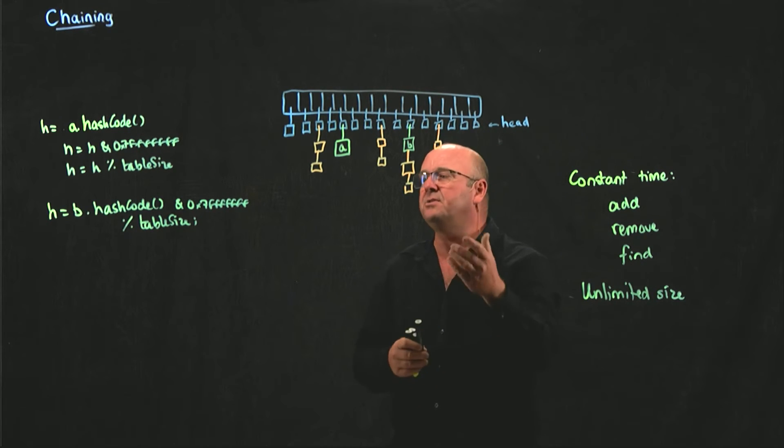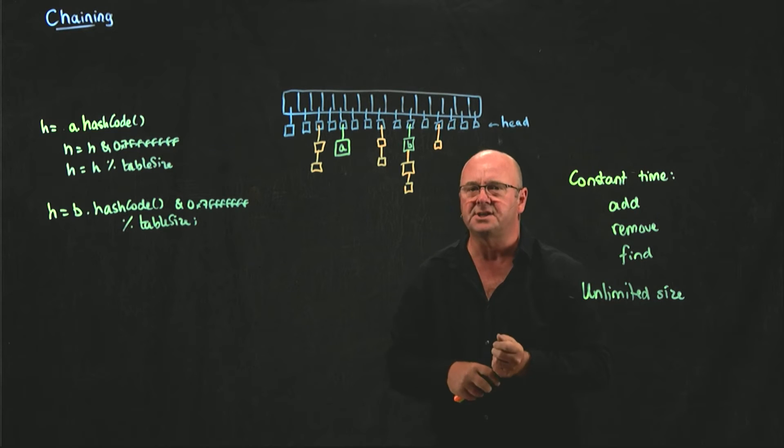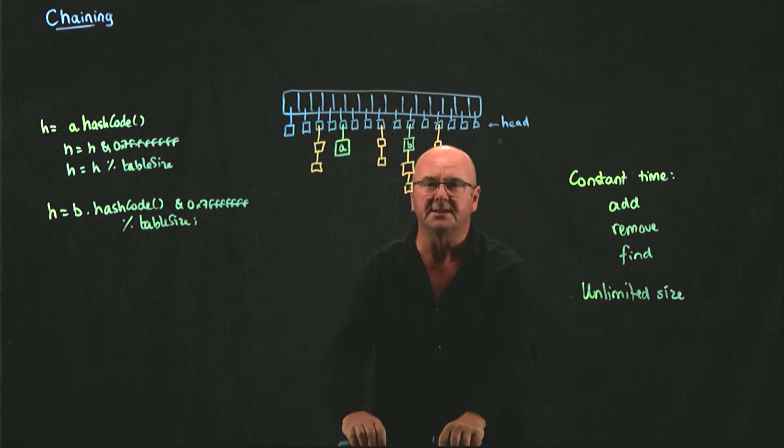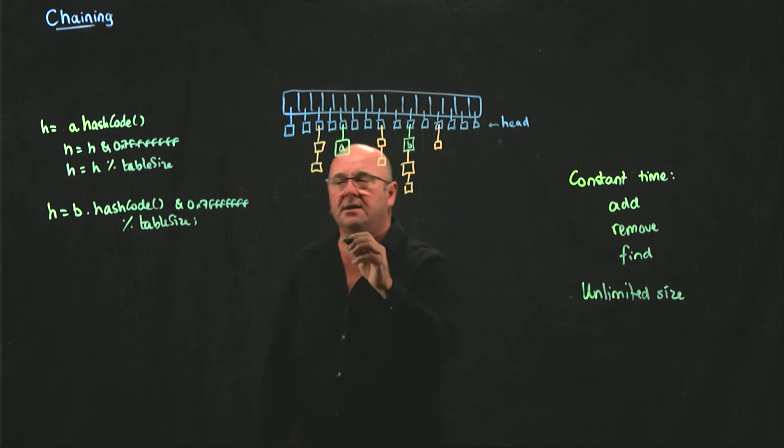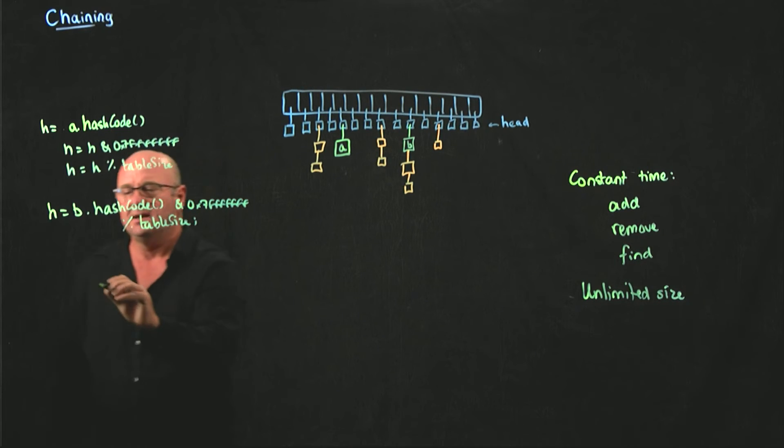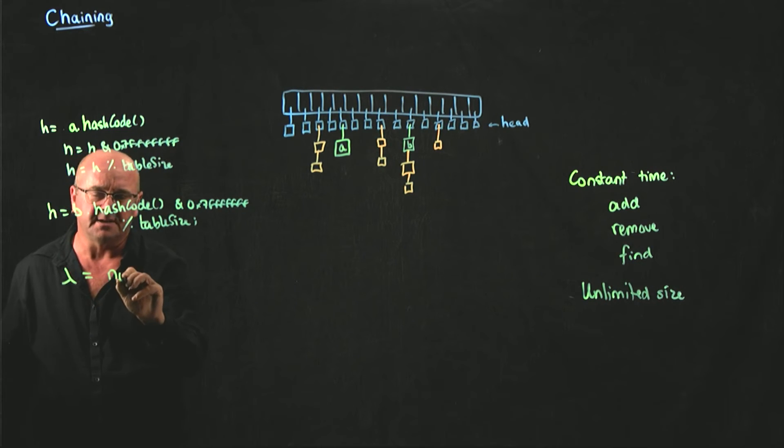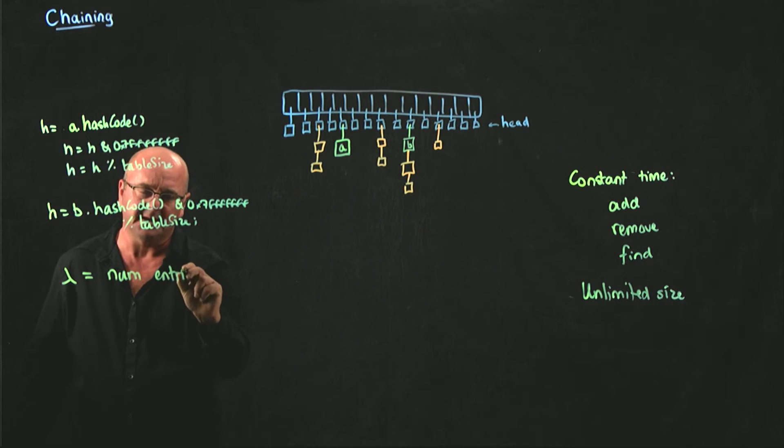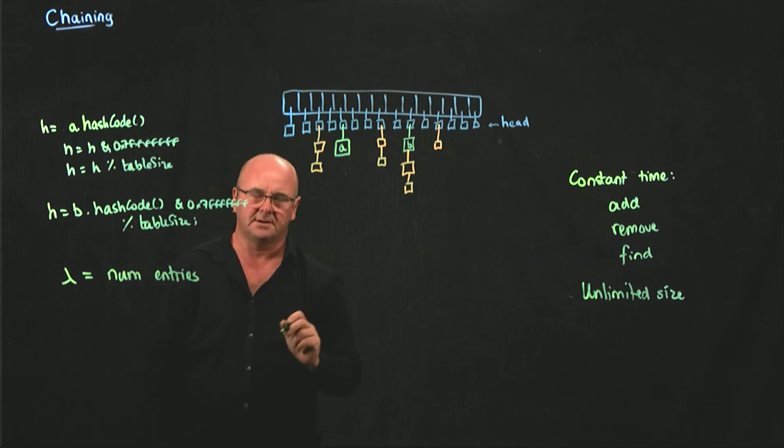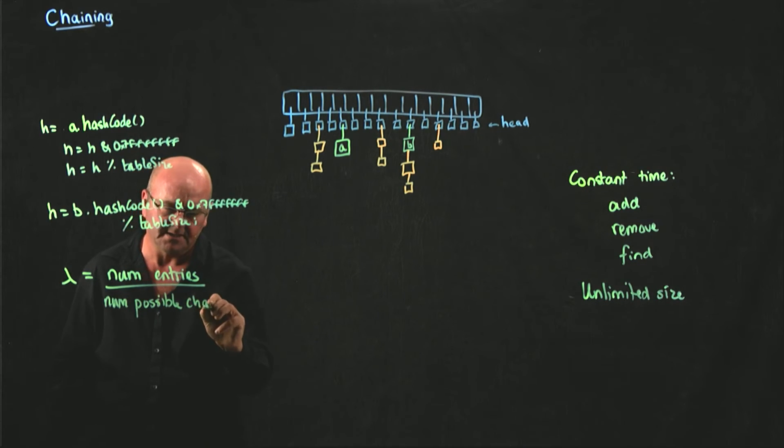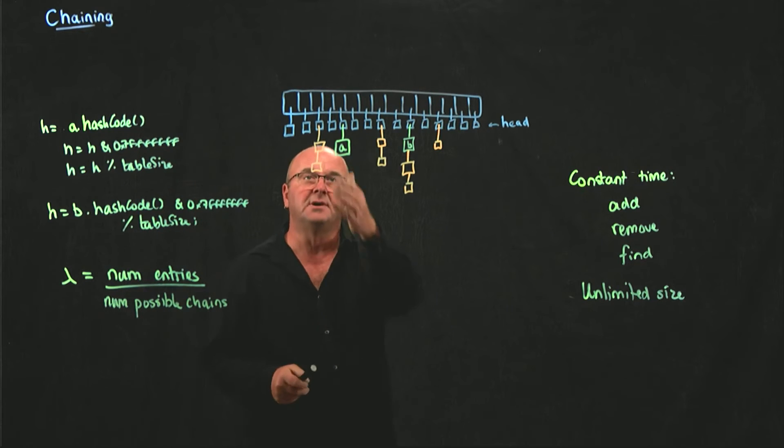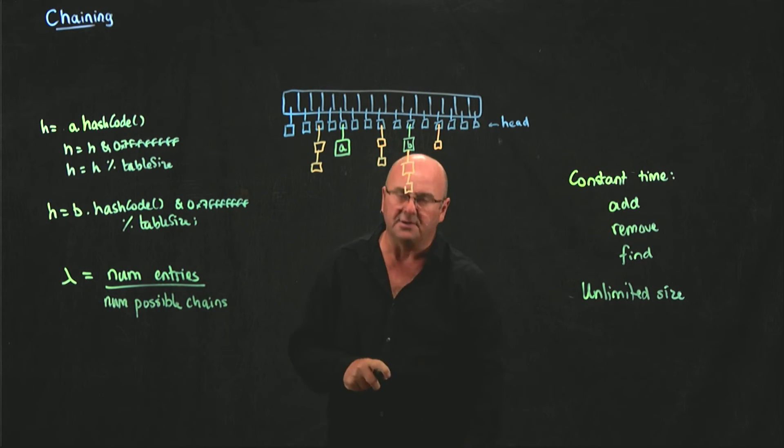So we saw load factor when we looked at linear probing, quadratic probing, double hashing. Our load factor was just the number of entries in the table divided by the table size. For a chained hash, a load factor lambda is the number of entries, just like it was for our other data structures, divided by the number of possible chains. In other words, the number of elements we have in our array of chains.